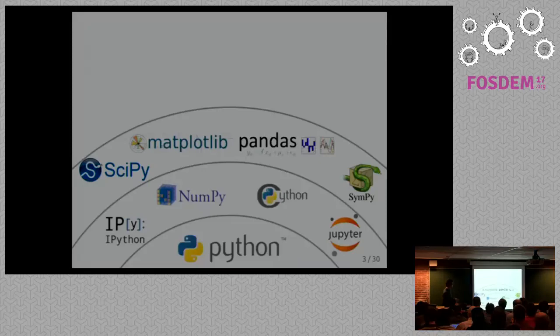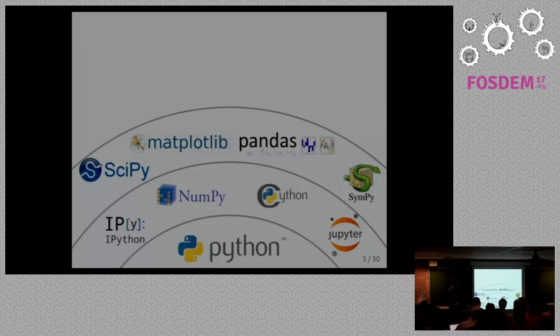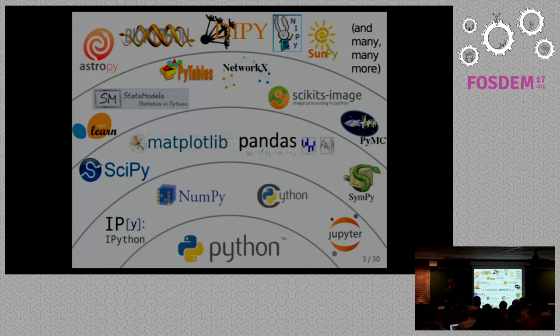This is a very rich ecosystem. One of the foundational libraries, NumPy, provides the numerical base to do numerical computing in Python. A lot of other libraries build on top of this core. You have the plotting libraries, the typical scientific routines, symbolic computing, Pandas for more data analysis. And also on top of this base, you have a lot of packages - a rich ecosystem.